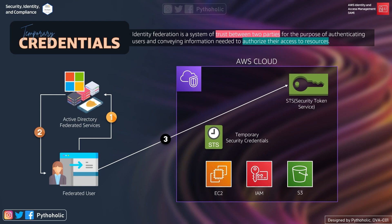One thing to remember here is that the temporary security credentials created by AssumeRoleWithSAML can be used to make API calls to any AWS service with one exception: you cannot call the AWS STS GetFederatedToken or GetSessionToken APIs. This is because doing so would defeat the whole purpose of session-based login — it's like keeping the cat in charge of the fish.